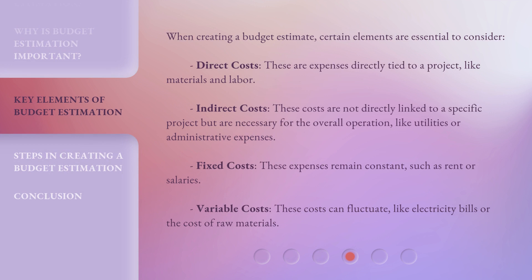Direct costs are expenses directly tied to a project, like materials and labor. Indirect costs are not directly linked to a specific project, but are necessary for the overall operation, like utilities or administrative expenses. Fixed costs are expenses that remain constant, such as rent or salaries. Variable costs are costs that can fluctuate, like electricity bills or the cost of raw materials.